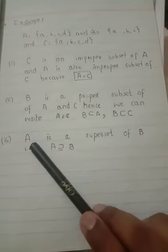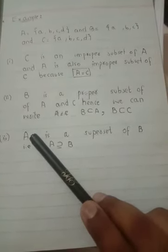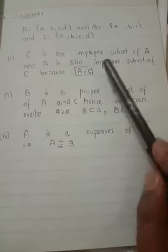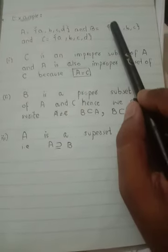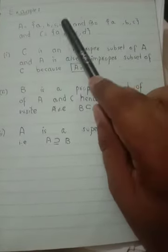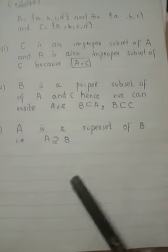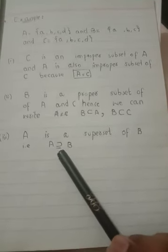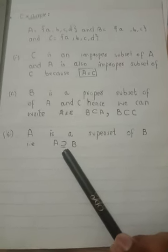A that is our parent set, so we can say A is superset of B because B is subset of A. So A is parent set or A is superset of B, and this is symbol to write a superset. A is superset of B.